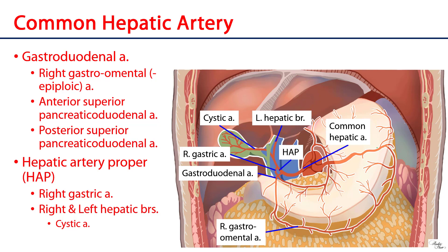Last and finally from the celiac trunk we have the common hepatic artery. The common hepatic artery has a right lateral course and consists of two major branches: the gastroduodenal artery — gastro for stomach, duodenal for duodenum — and the hepatic artery proper, or HAP for short. The hepatic artery proper takes a more superior course, whereas the gastroduodenal takes a more inferior course, heading down across the duodenum.